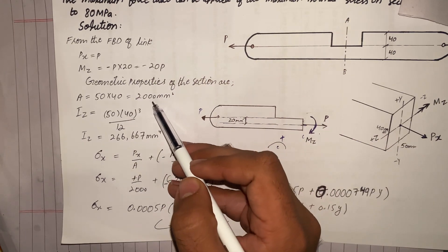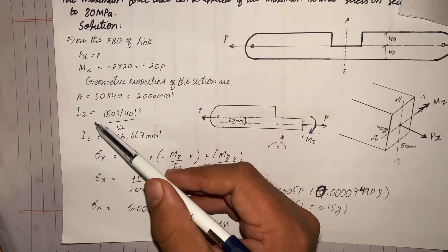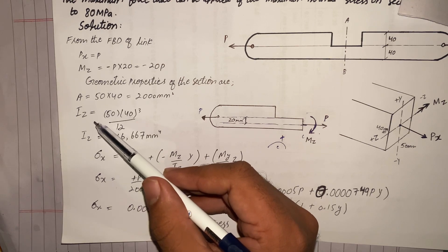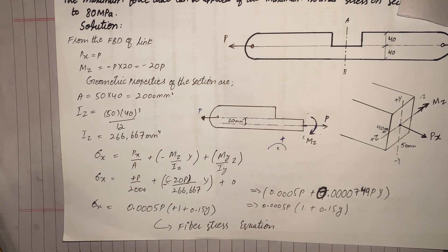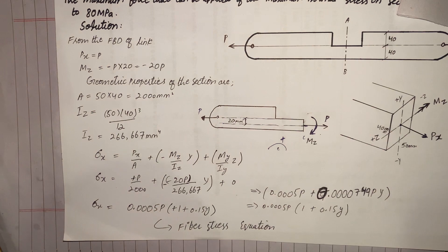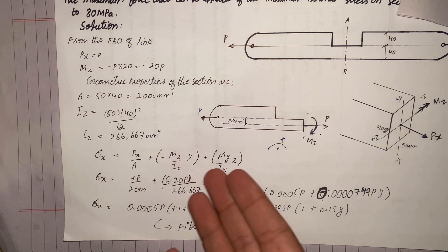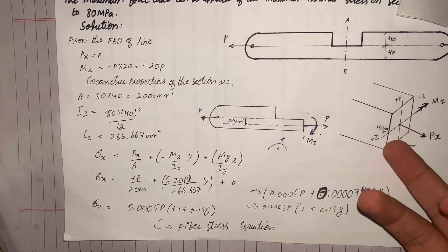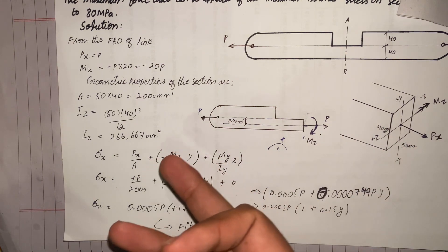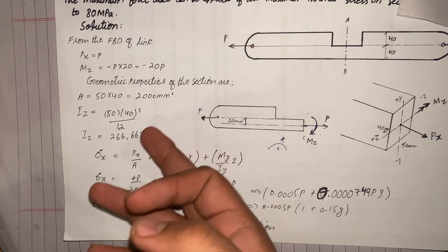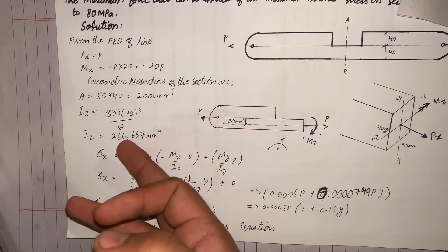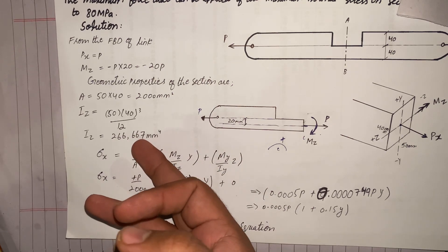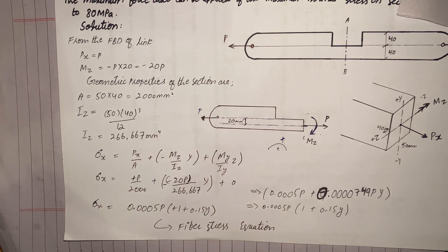The area at section AB is base times height: 50 mm times 40 mm equals 2000 mm². For the moment of inertia, we calculate it about the Z axis because the moment is about the Z axis — there is no moment about the Y axis, so that term becomes zero. Using the formula bh³/12 with base 50 and height 40, the moment of inertia about the Z axis equals 266,667 mm⁴.